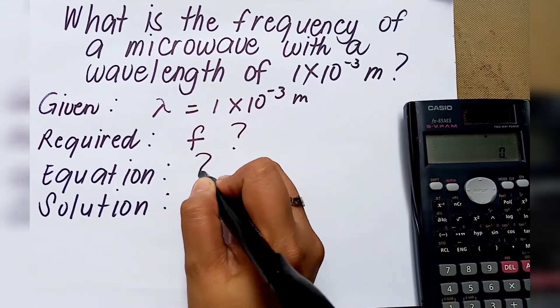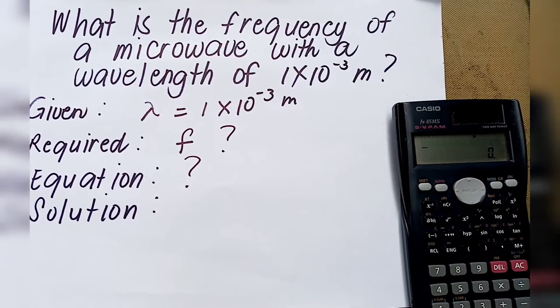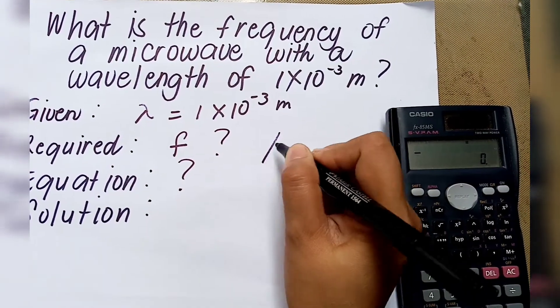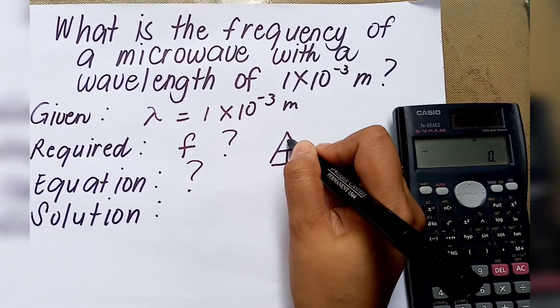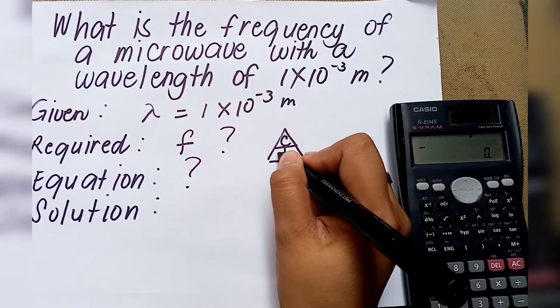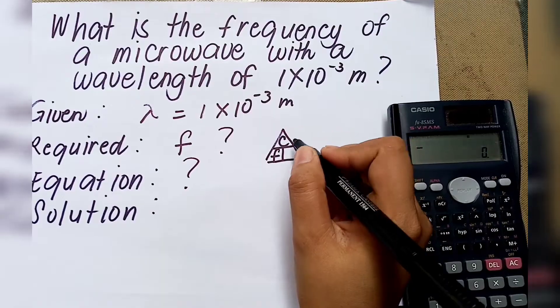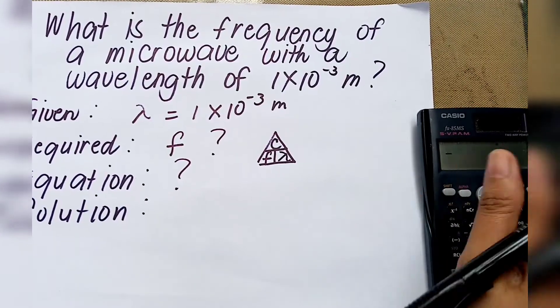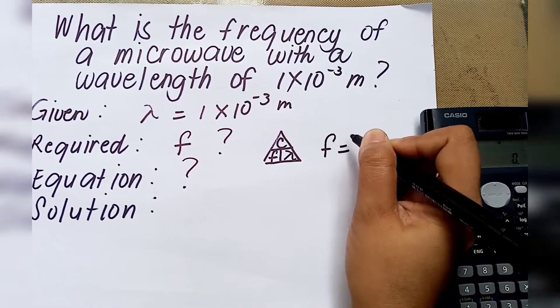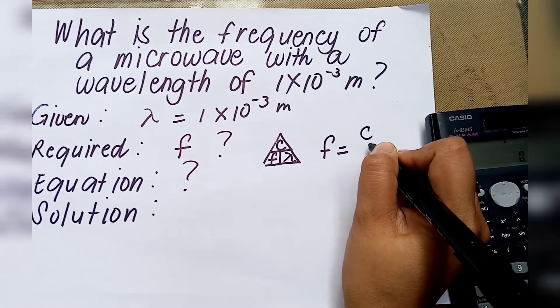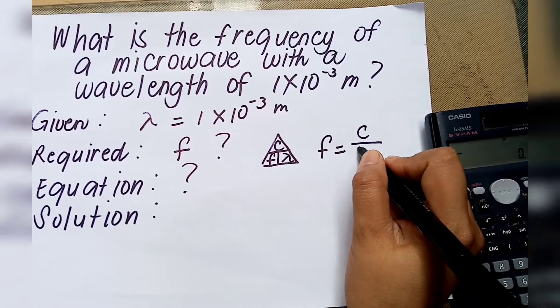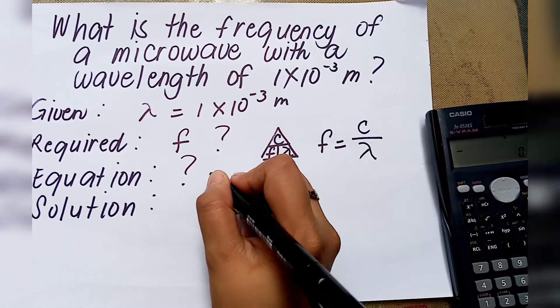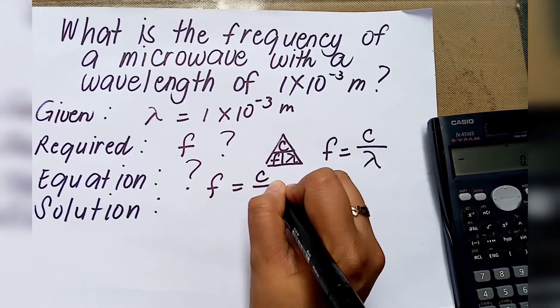What is the formula or the equation to be used in this problem? Let us consider speed of EM wave, frequency, and the wavelength. Since we are looking for the frequency, we will use the speed of the EM wave divided by the wavelength. This will be the formula to be used in this problem.